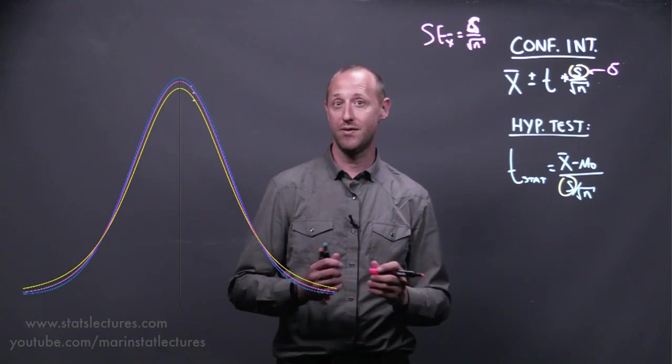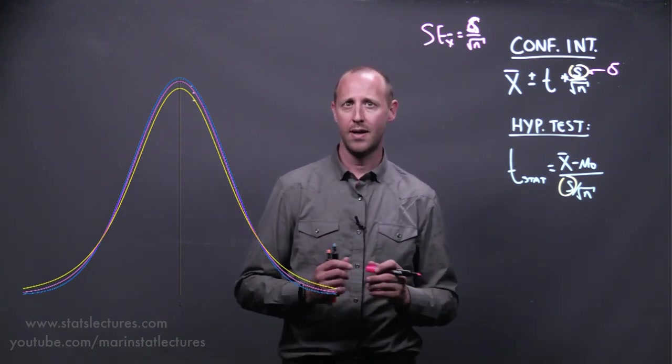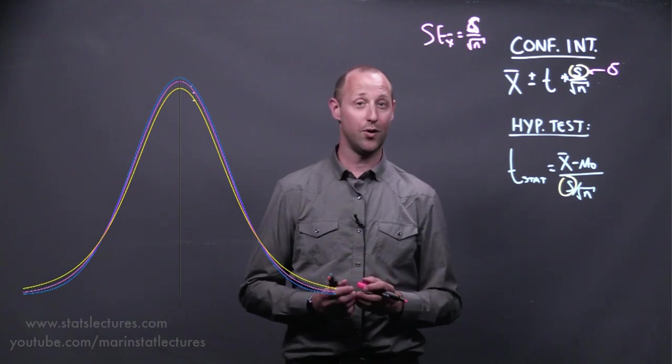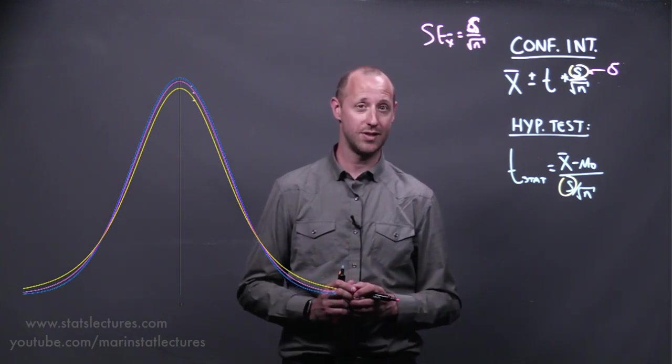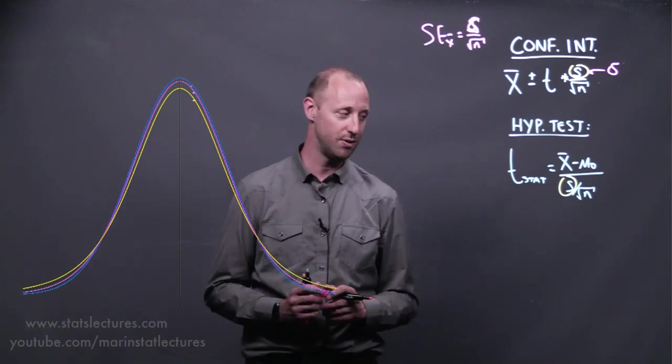He went on to develop this family of distributions, the t-distribution. Because he did the work for Guinness breweries, it didn't get published under his name but under the name Student. So it's often known as Student's t-distribution.